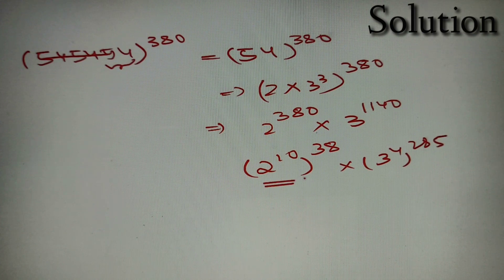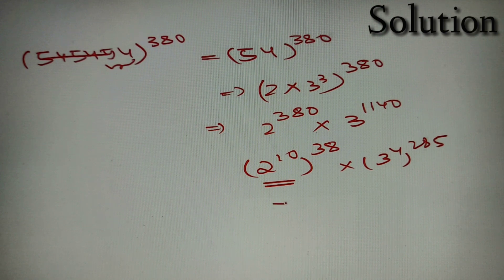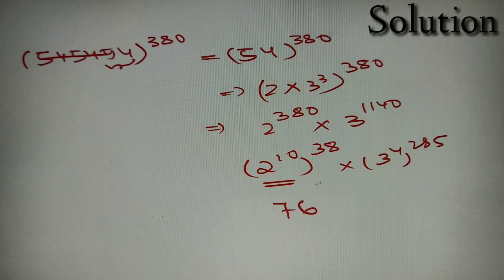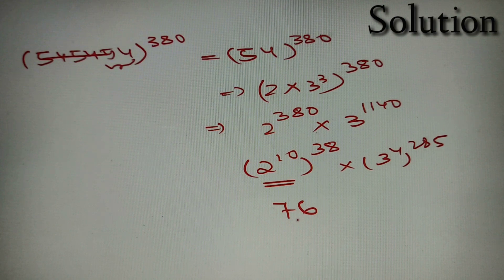Now we know that 2 raised to power 10 raised to any even power will always end in 76. So the last two digits of this whole part can be directly written as 76 because of this property.